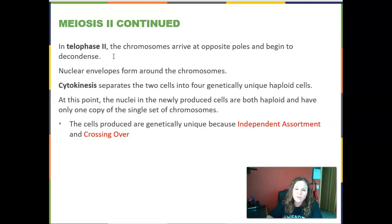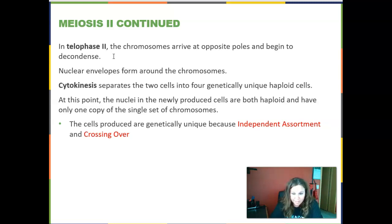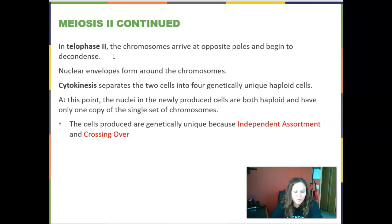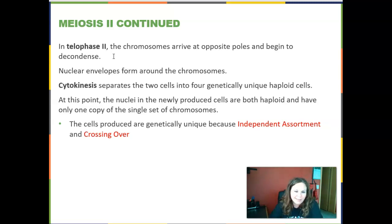In telophase II, chromosomes arrive at opposite poles and begin to decondense. The nuclear envelope reforms from vesicles of phospholipids. Cytokinesis separates the two daughter cells into four genetically unique haploid cells. The nuclei in the newly produced cells are haploid — in a human, 23 chromosomes, each existing as just one chromatid, now a mix of mom and dad's chromosomes, with some having pieces from each parent due to crossing over.